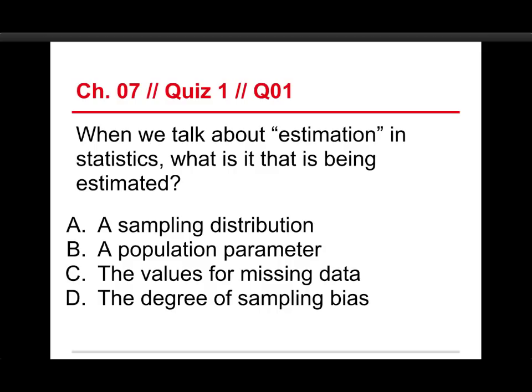The first question on this quiz is, when we talk about estimation in statistics, what is it that's being estimated? The choices are a sampling distribution, a population parameter, the values for missing data, or the degree of sampling bias.